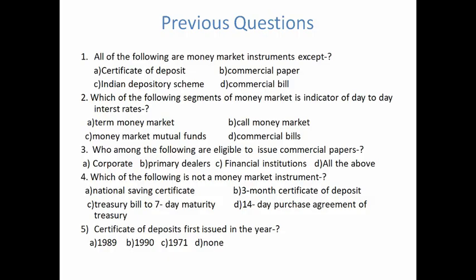Practice questions frequently asked in exams like IBPS and SSC: Which of the following is NOT a money market instrument? Options: certificate of deposit, commercial paper, Indian depository scheme, and commercial bills. Certificate of deposit, commercial paper, and commercial bills are money market instruments, whereas the Indian depository scheme is a capital market instrument — so the answer is Indian depository scheme.